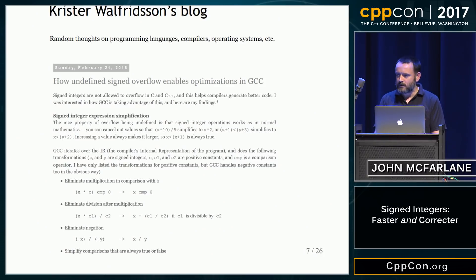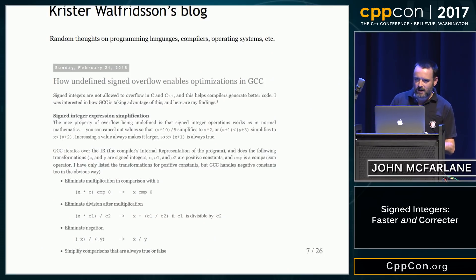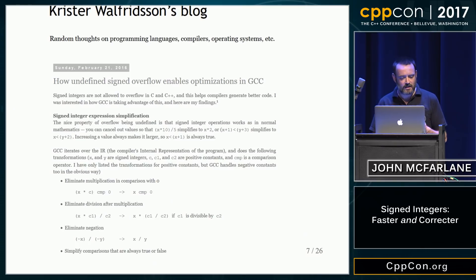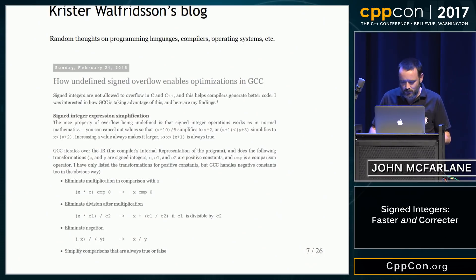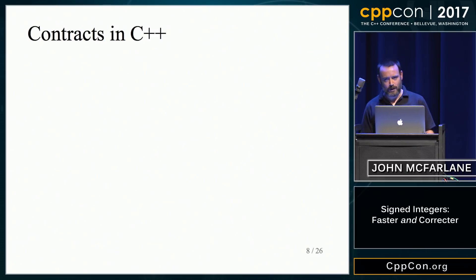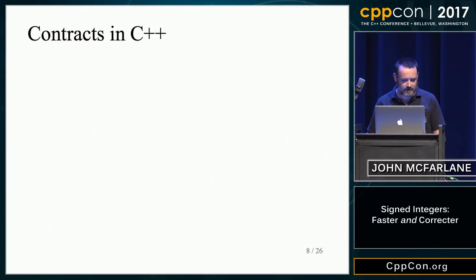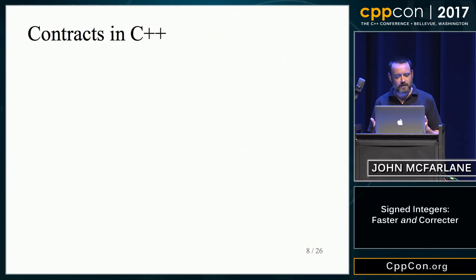I've also been trying to persuade other people — colleagues, people on the Slack channel — that signed is faster, and it's difficult to persuade people. It's generally difficult to persuade people of things. So I'm not going to try. I just want to share these cool optimizations. But I will have a quick rant about undefined behavior contracts, that kind of thing, because it is fundamentally a difficult thing to explain to people.